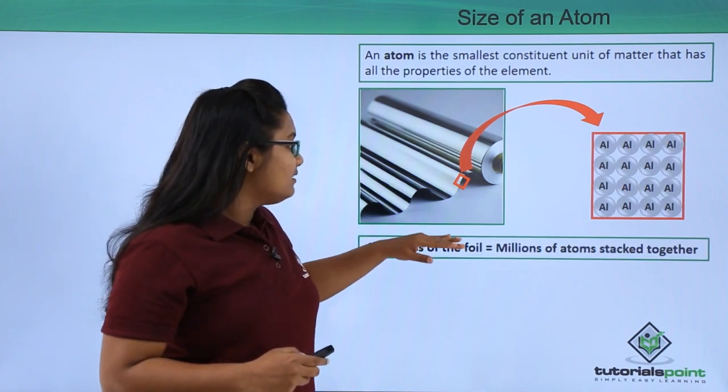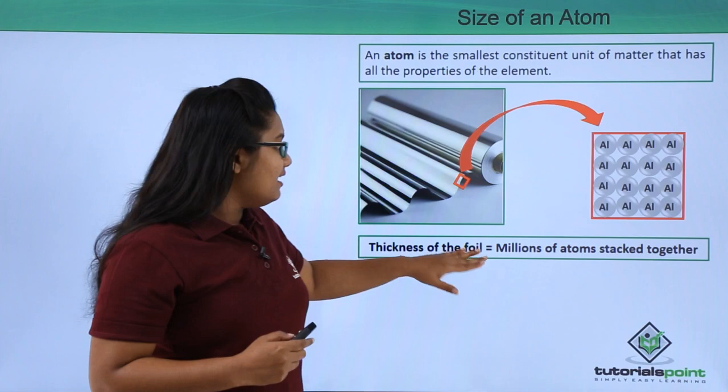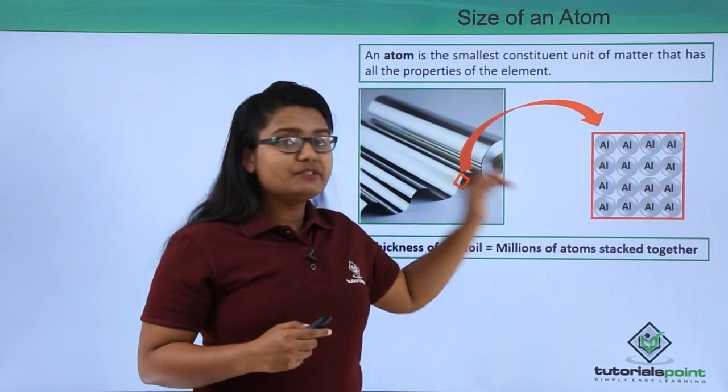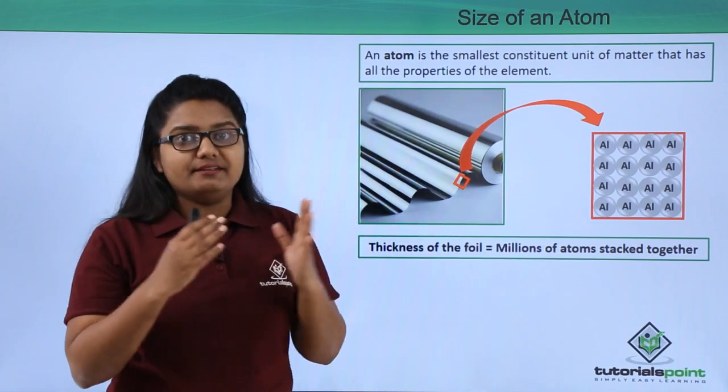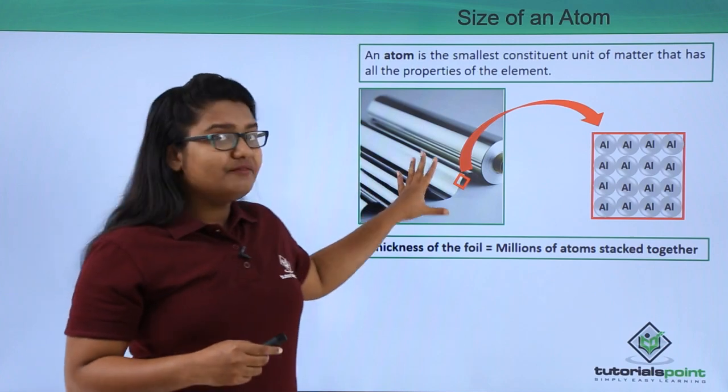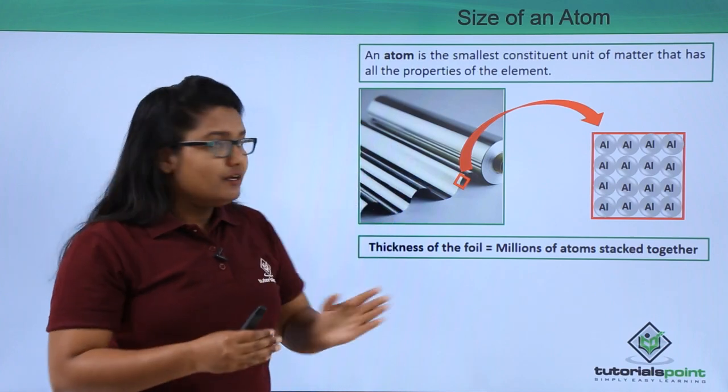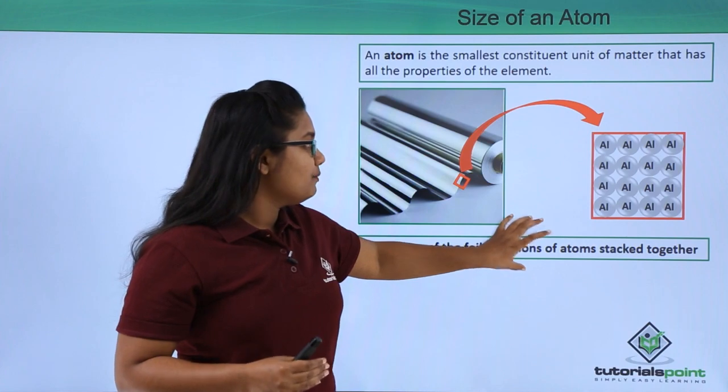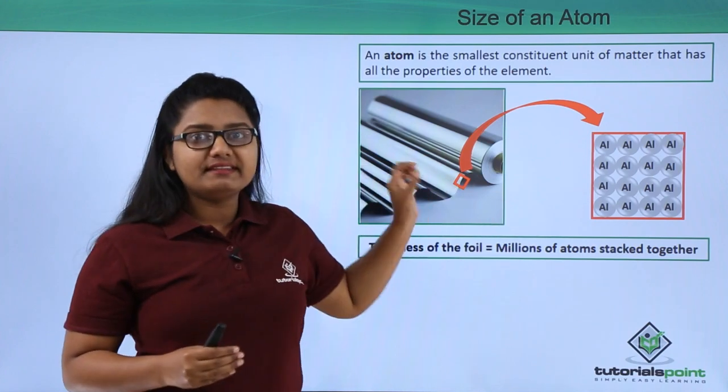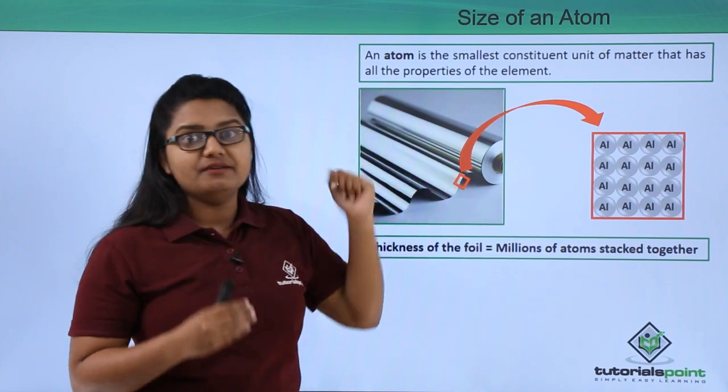The thickness of this thin foil has millions of atoms of aluminum stacked together. So we can imagine how small an atom could be, so that millions of atoms can fit in this small or thin edge of aluminum foil.